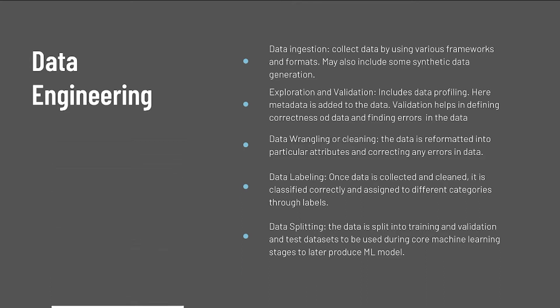First is data ingestion, where we collect data by using various frameworks and formats such as Spark, HDFS, CSV, etc. This step may also include some synthetic data generation or enrichment. Second is exploration and validation, which includes data profiling where we are adding metadata to the data — for example, max, min, or average. Validation helps us in defining the correctness of the data and finding errors in the data if there are any.